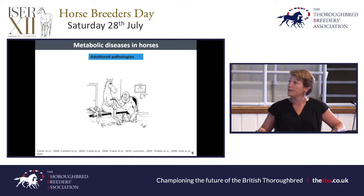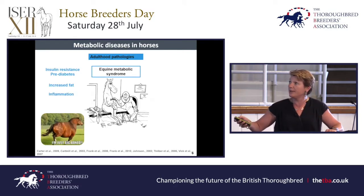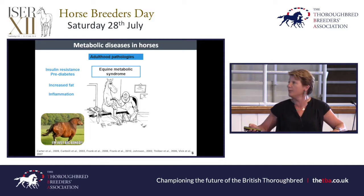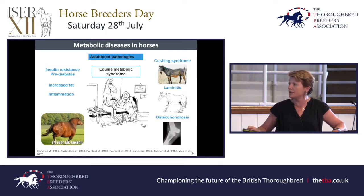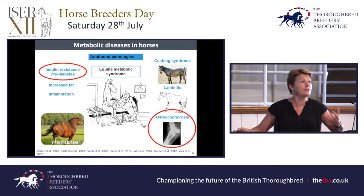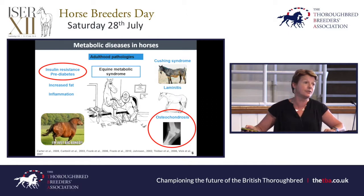We're really interested in metabolism because we're interested in nutrition, and as you know, we have the equine metabolic syndrome. In equine metabolic syndrome you have insulin resistance and pre-diabetes, increased fat, and inflammation that will reduce immune resistance. I've been interested in the early events leading to the onset of osteochondrosis and insulin resistance, which can then lead to diabetes.